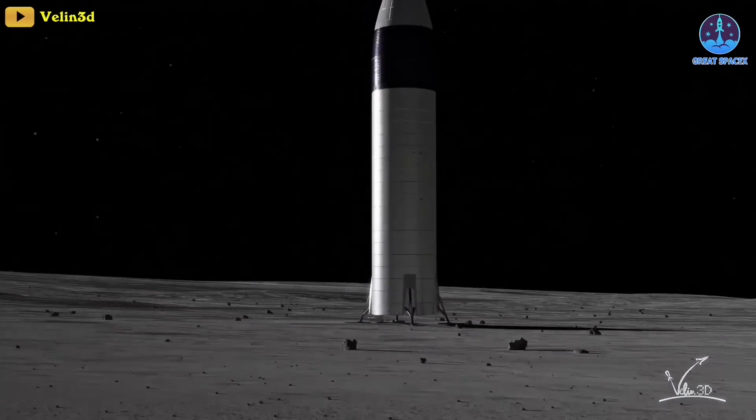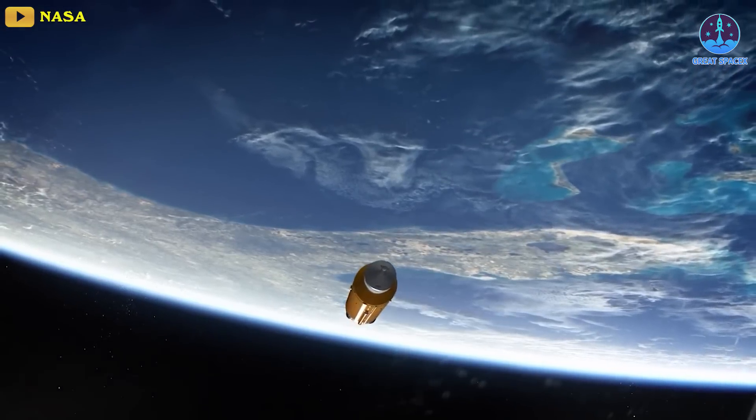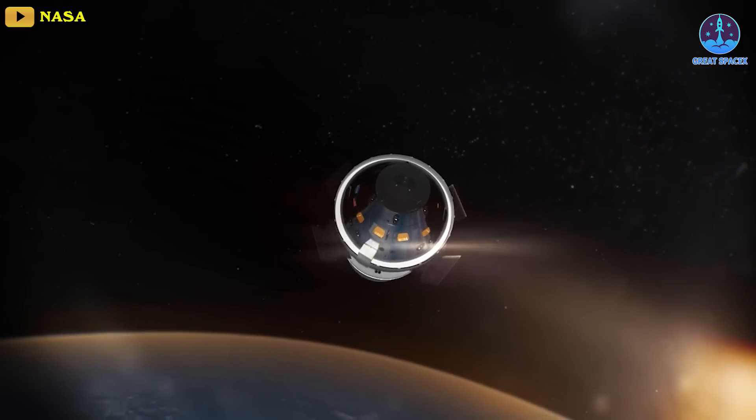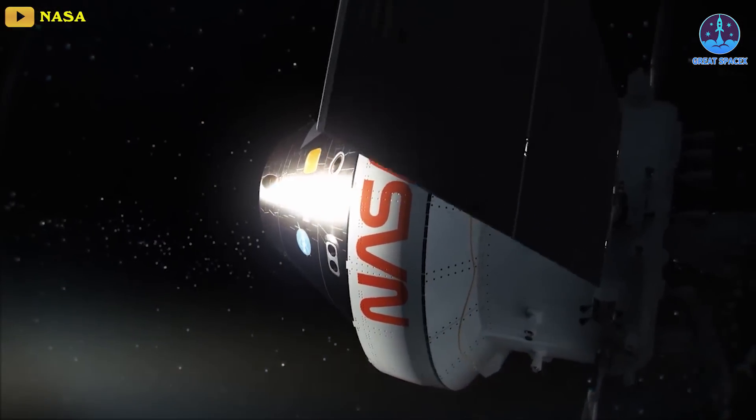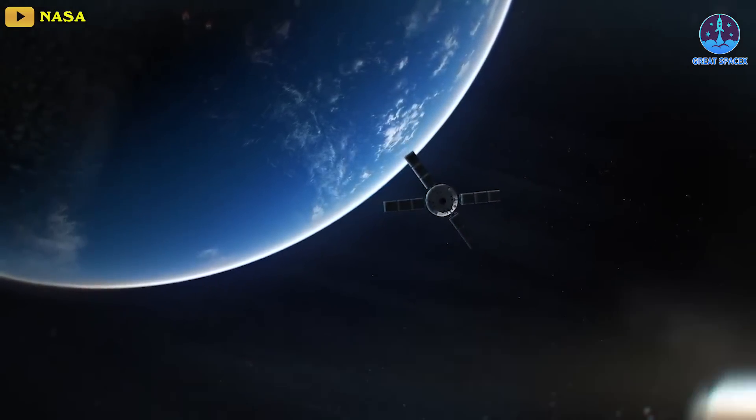Once it reaches its destination and performs the necessary checkouts and tests, Starship will wait for the astronauts which will leave Earth on board the Orion spacecraft on the SLS. However, what will happen to the Starship after astronauts return from the moon and make their way back on the Orion is unclear.